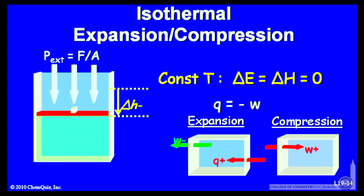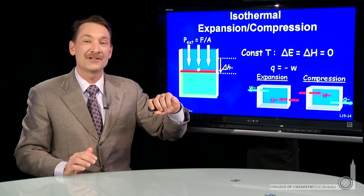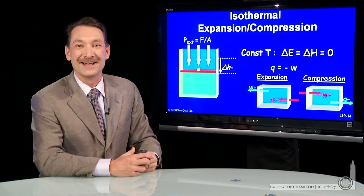In compression, I do work on the system. That tends to raise its internal energy. But I can lose that energy by letting a joule of heat leave the system. That's expansion and contraction isothermally for an ideal gas.